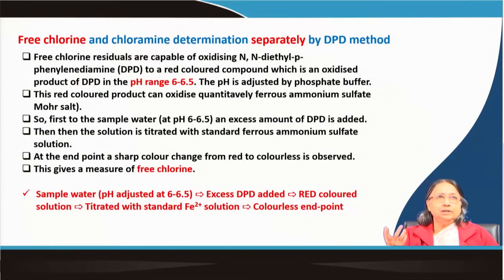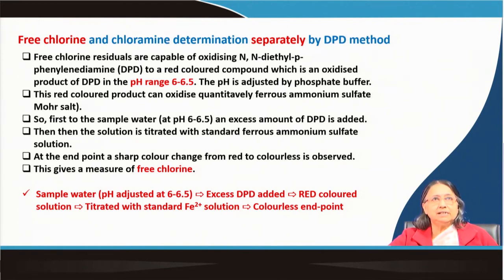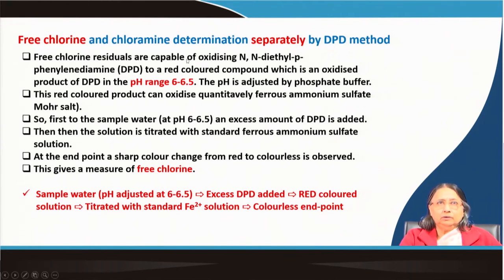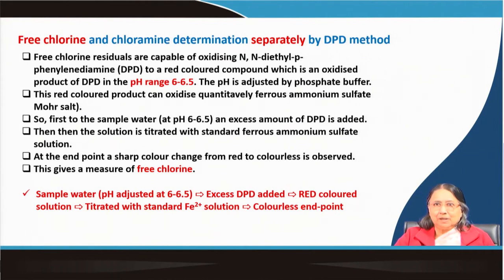For free chlorine and chloramine determination separately, we use the DPD method. Free chlorine residuals are capable of oxidizing N,N-diethyl-p-phenylenediamine (DPD) to a red-coloured compound, which is the oxidized product of DPD. Chlorine is an oxidizing agent, and DPD is a reagent oxidized by chlorine to give a red colour. The pH range should be 6 to 6.5, adjusted by phosphate buffer.